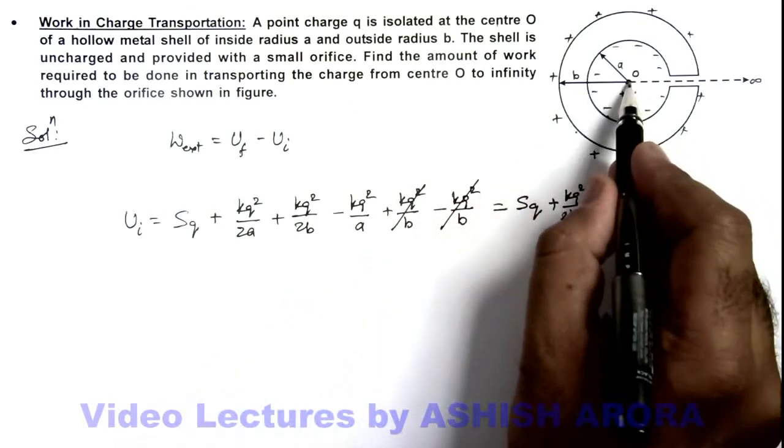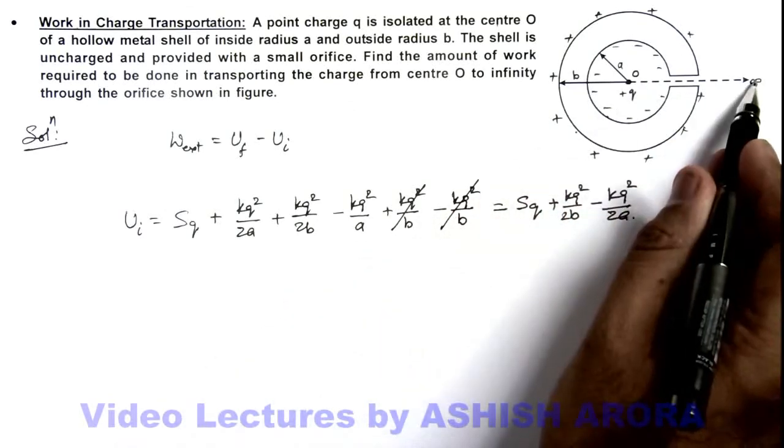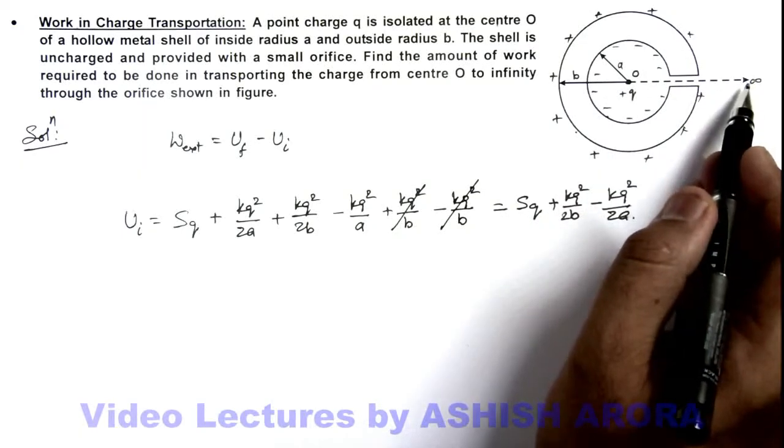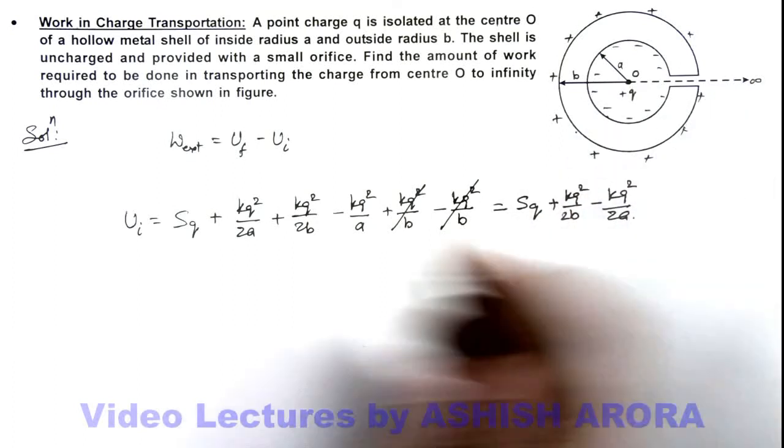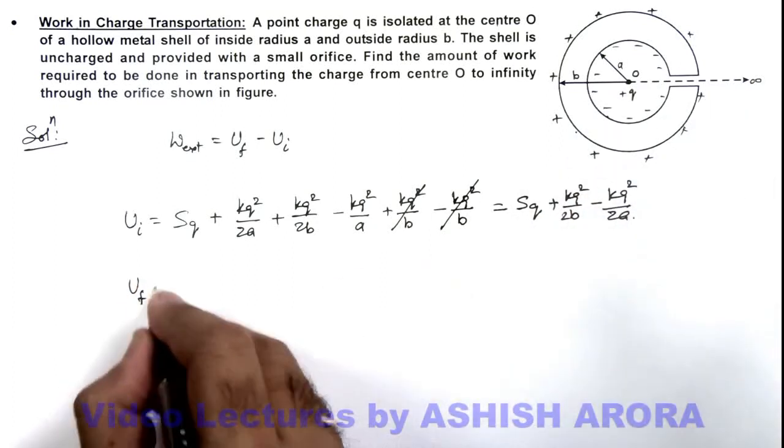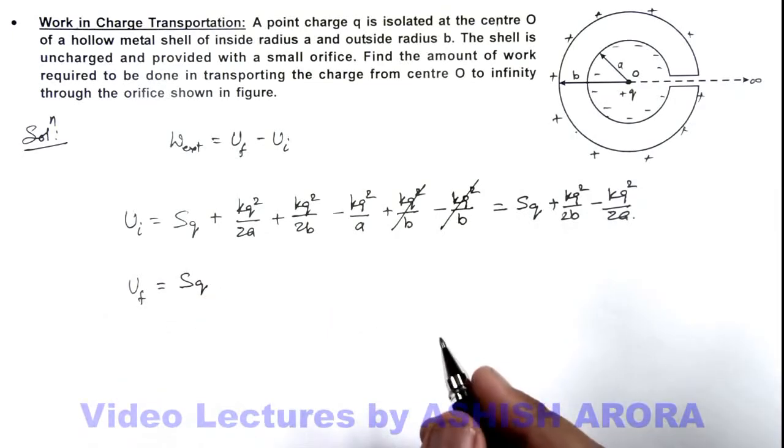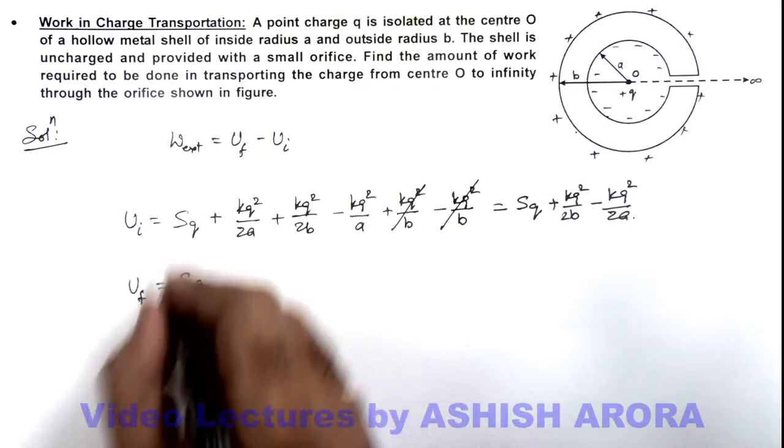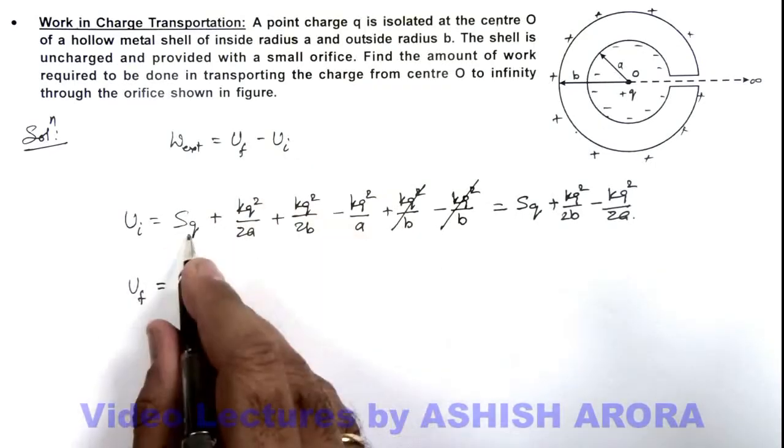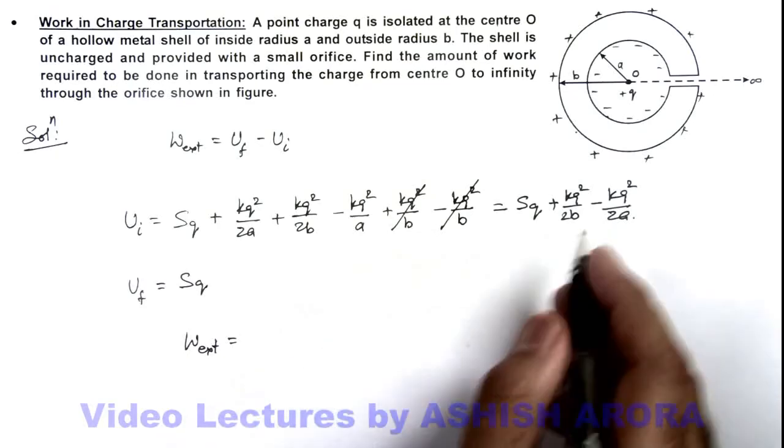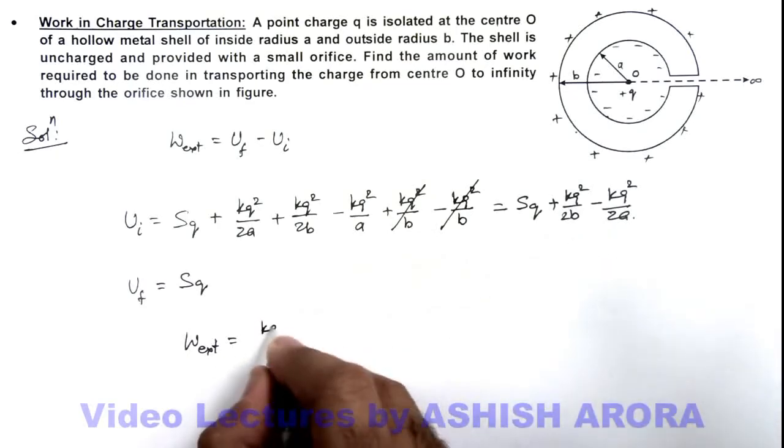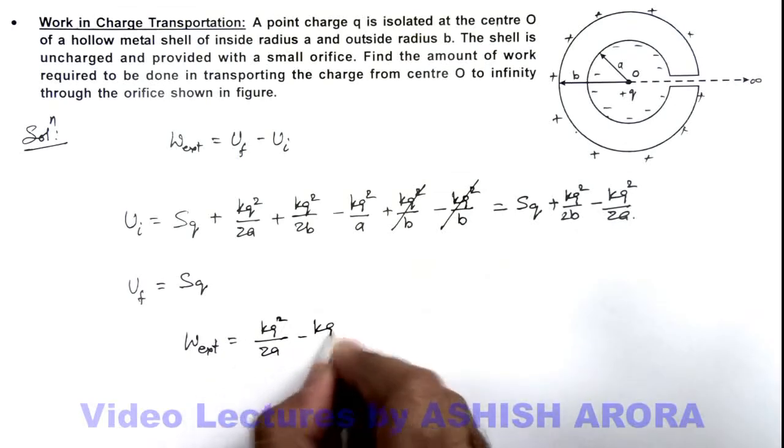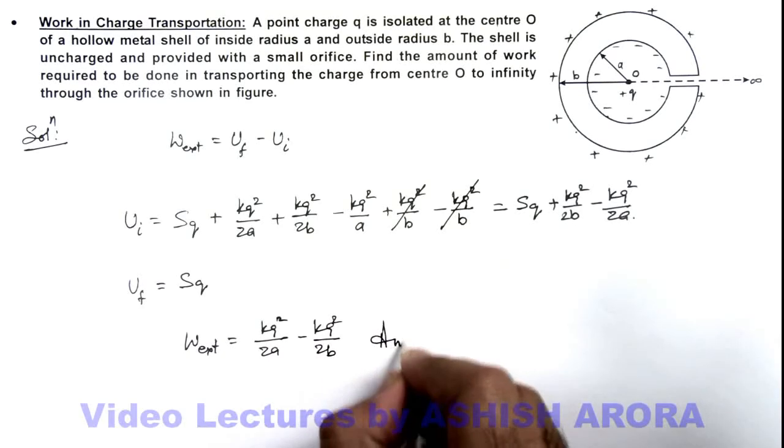So when the charge is taken from this point to infinity, these induced charges will vanish and in the final state only the self energy of this point charge will remain. So final energy is simply Sq. The external work can be calculated by substituting these two values - Sq gets cancelled out, and the result we are getting is kq²/2a - kq²/2b. That will be the answer to this problem.